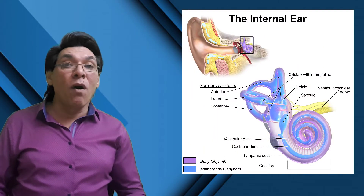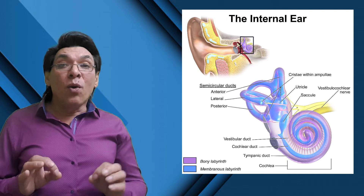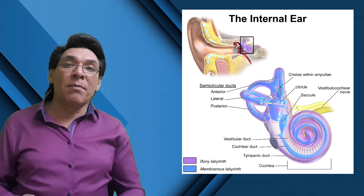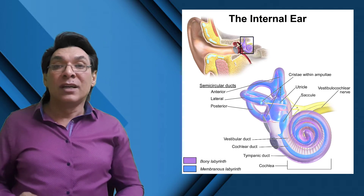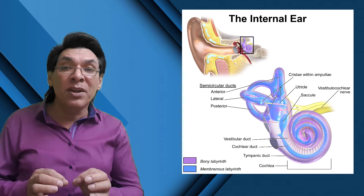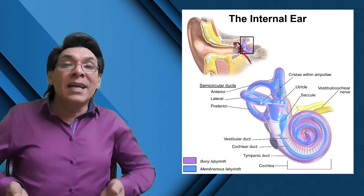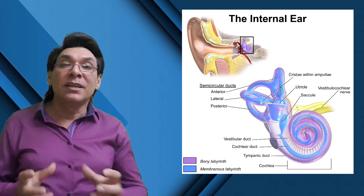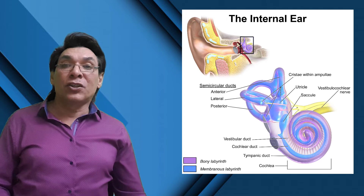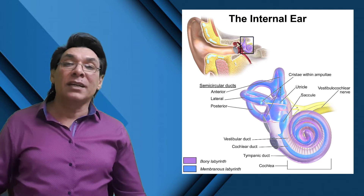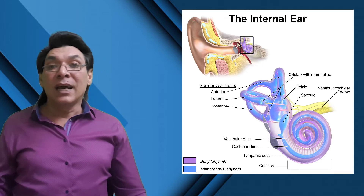The inner ear is a complex system of intercommunicating chambers and tubes called a labyrinth. The osseous labyrinth is a bony canal in the temporal bone filled with fluid called perilymph. The membranous labyrinth is a tube that lies within the osseous labyrinth and is filled with fluid called endolymph. The oval window is the entrance to the inner ear, covered by the stapes. The three parts of the labyrinth are: the cochlea (functions in hearing), the semicircular canals (functions in equilibrium), and the vestibule (functions in both hearing and equilibrium).